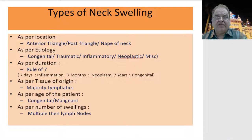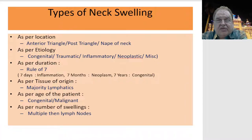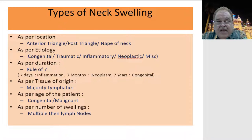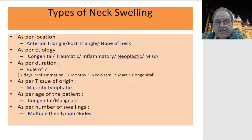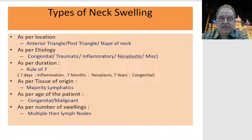If you look at neck swellings, you can divide them according to various types of presentations. As per location: anterior triangle, posterior triangle, or the nape of the neck. As per etiology: congenital, traumatic, inflammatory, neoplastic, or miscellaneous. As per duration, there is the rule of seven — seven days it is inflammatory, seven months it is neoplastic, and seven years it is a congenital swelling. Also classified as per tissue of origin, age of the patient, and number of swellings — more swellings suggest lymph nodes.